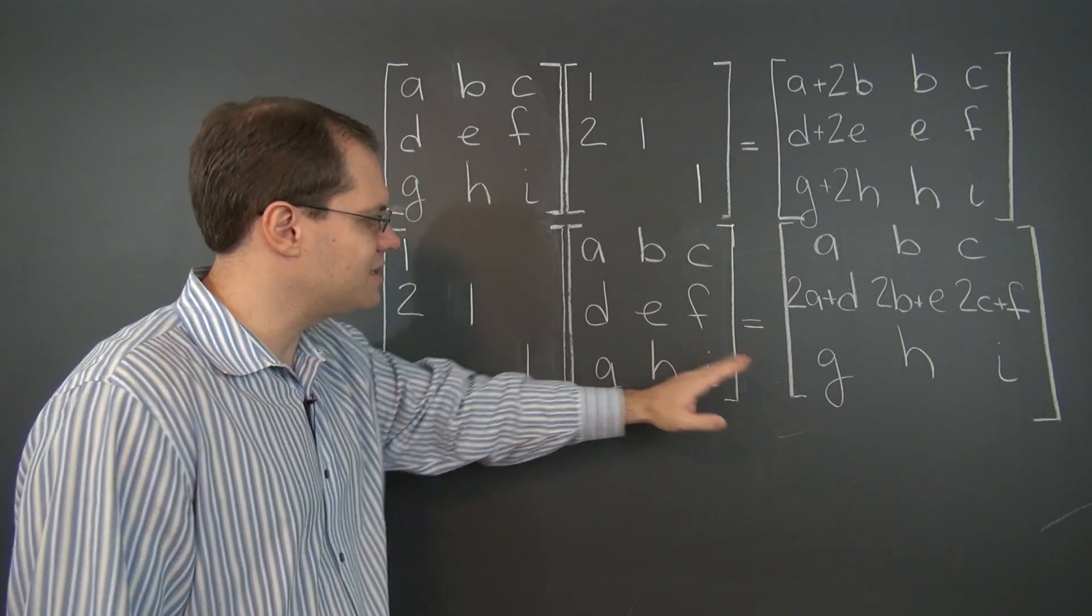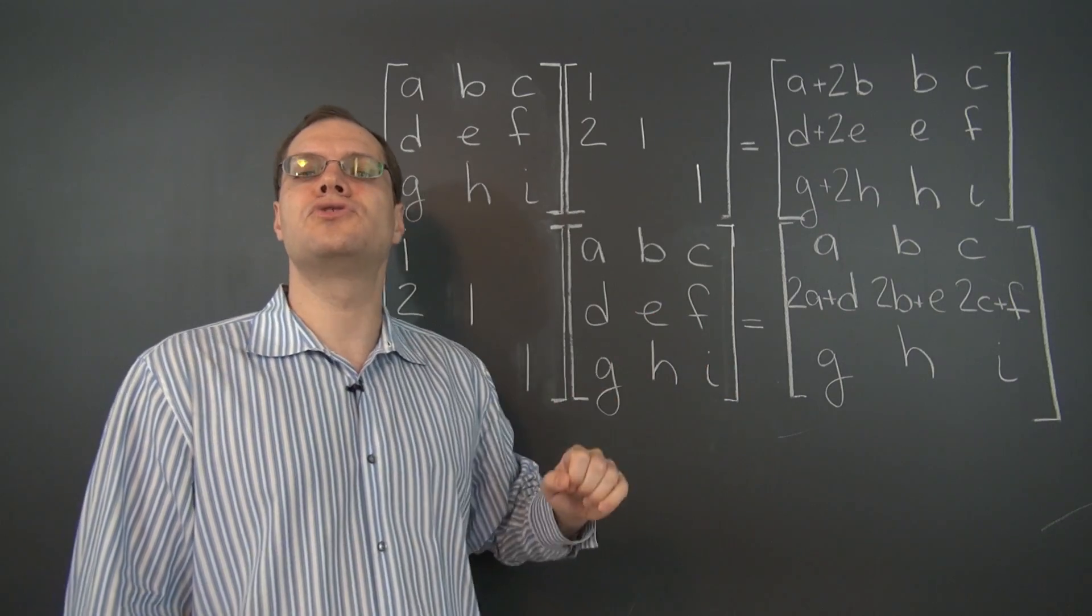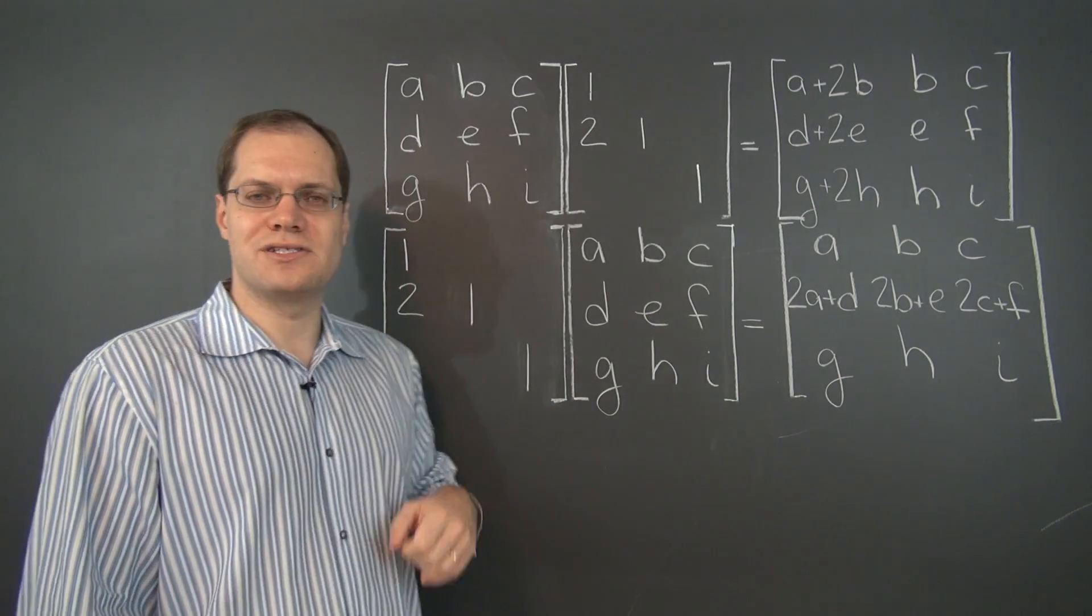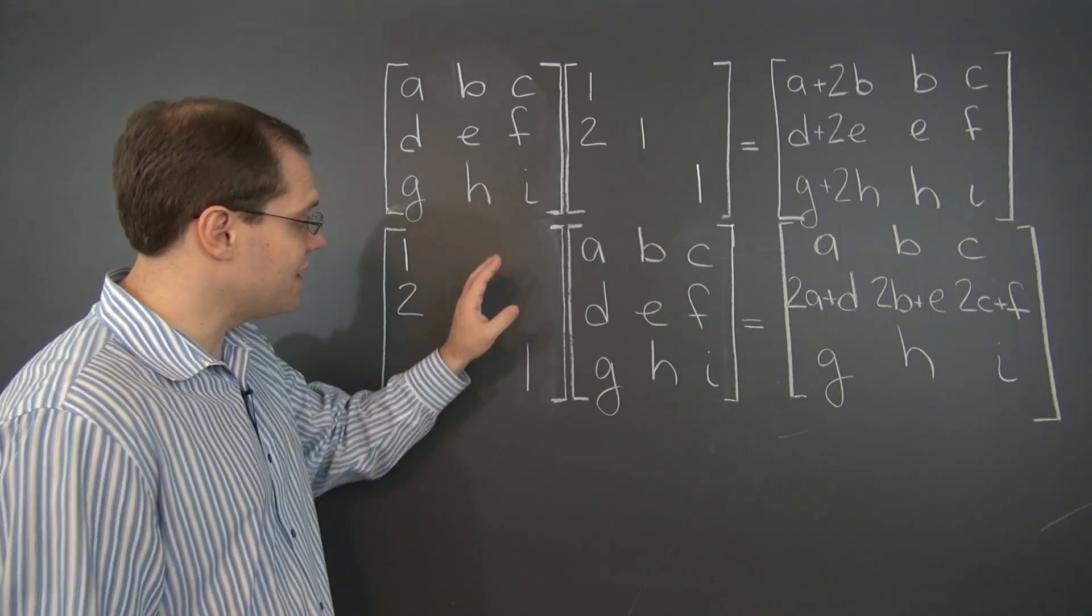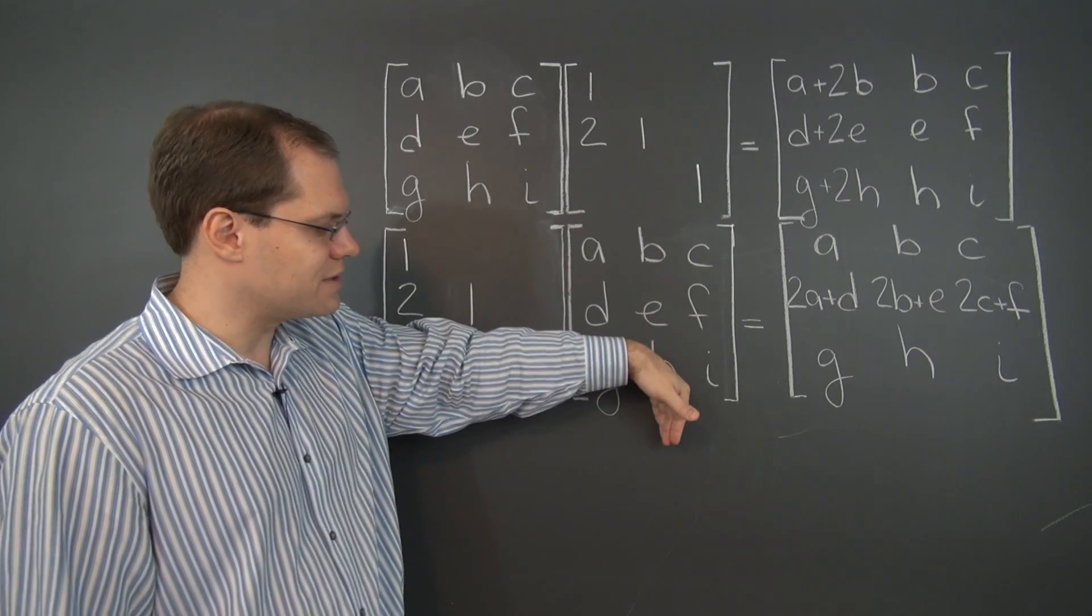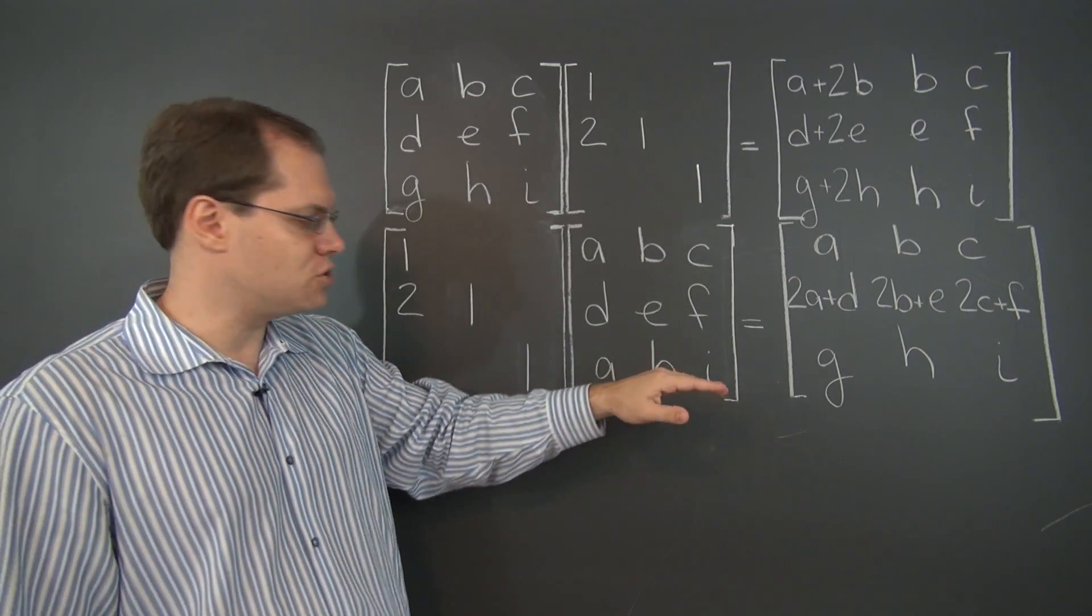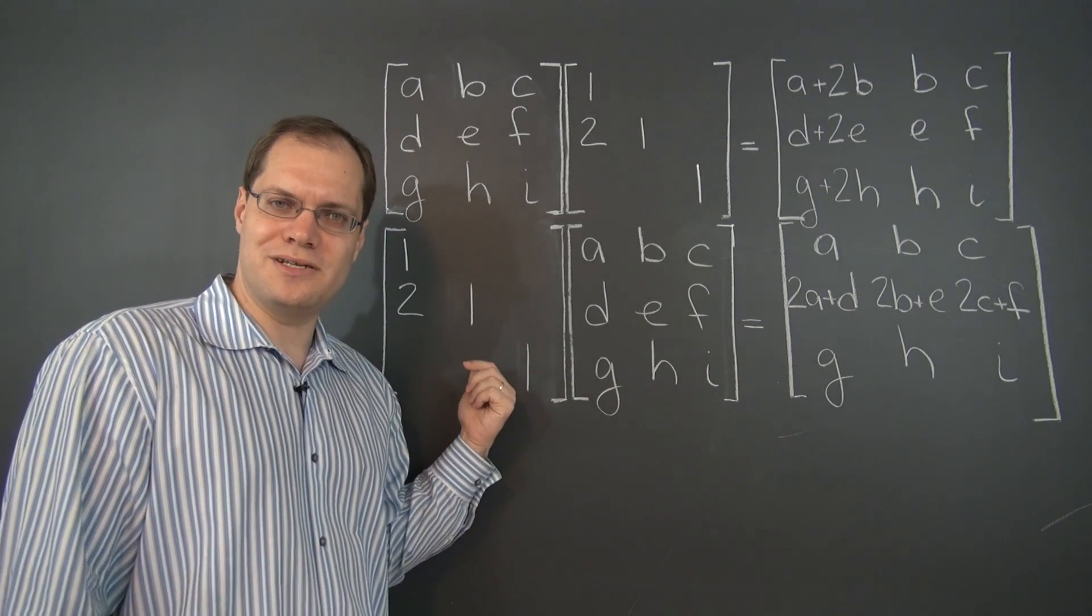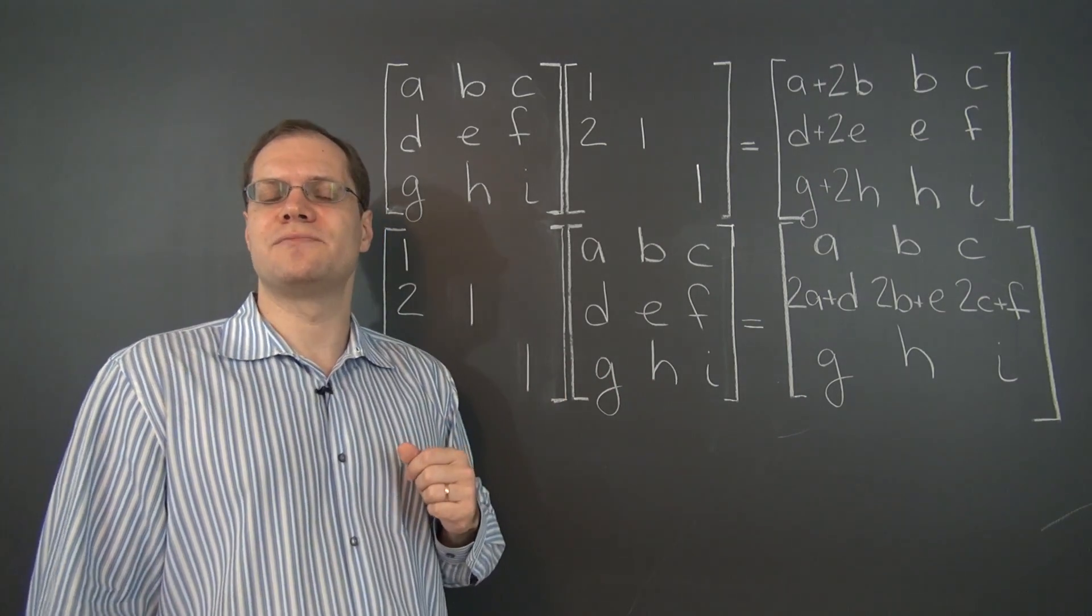And actually, when I was carrying out the second multiplication, I used the rows perspective. The rows perspective is more insightful when the matrix with a lot of zeros comes on the left. Because then, when you interpret the linear combinations of rows of this matrix, they're very simple because there are so many zeros in this matrix.